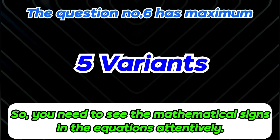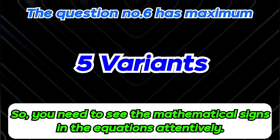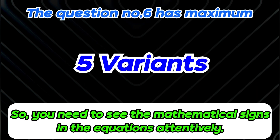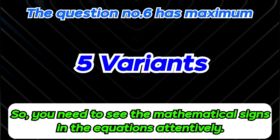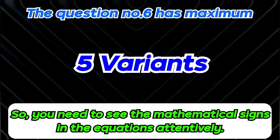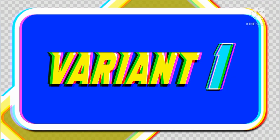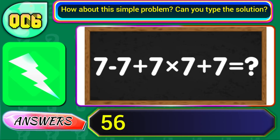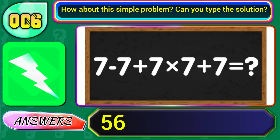Equation number 6 has maximum 5 variants, so you need to see the mathematical science in the equations attentively. In variant 1, if you get the equation 7 minus 7 plus 7 into 7 plus 7, then the answer will be 56.